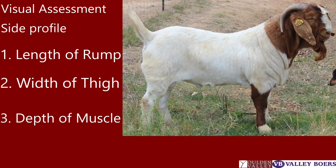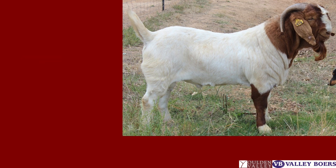So we have looked at the length of rump, width of thigh, and depth of muscle. A side profile can still tell you a lot about the animal's back end muscle.